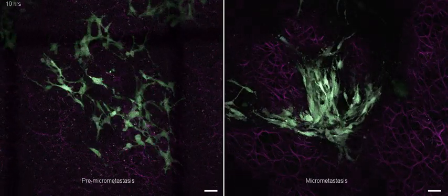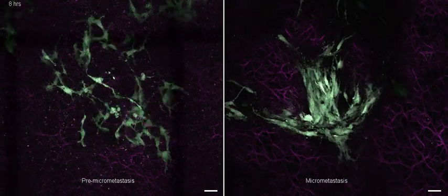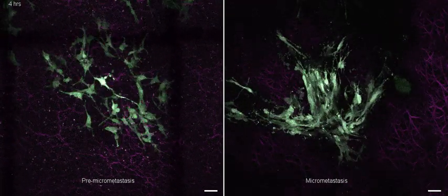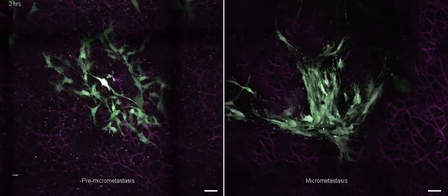On the left-hand side, you see that the cells within the pre-micrometastasis are very motile. They move around a lot. On the right-hand side, the cells are just sitting there and are not motile.